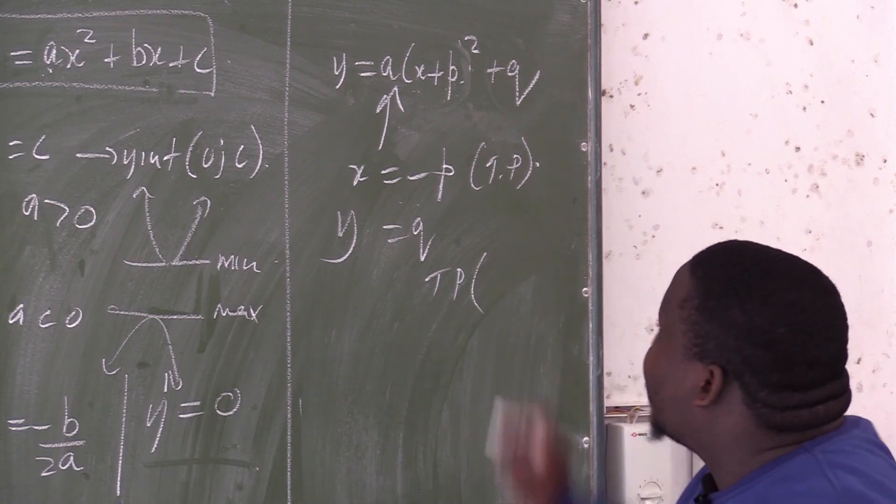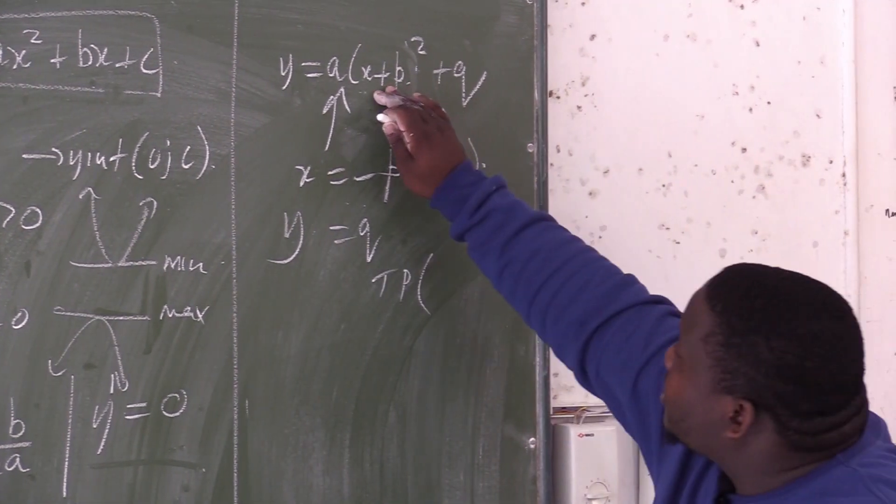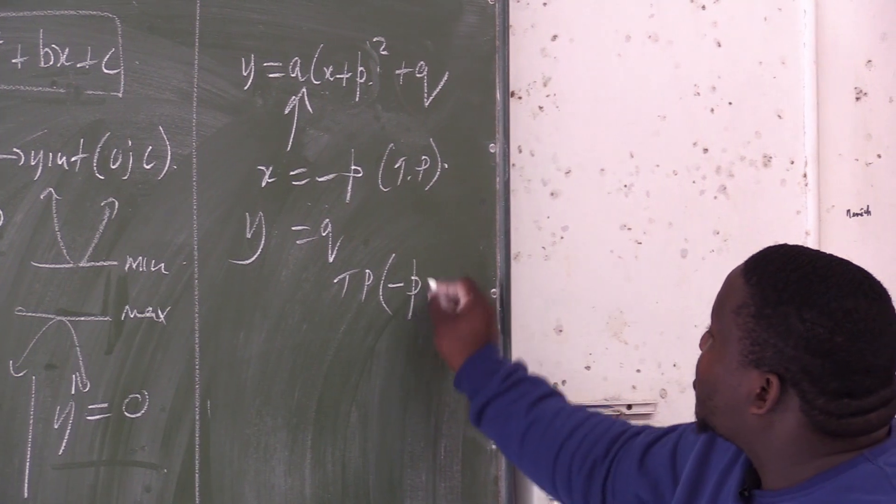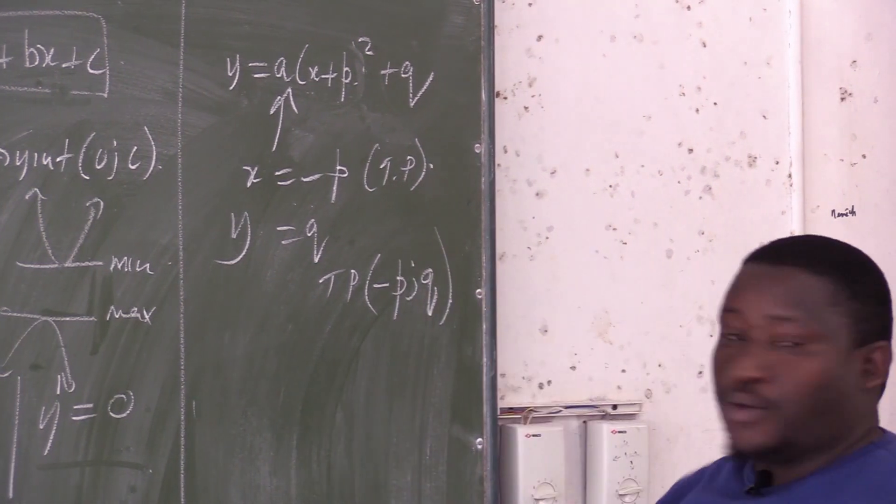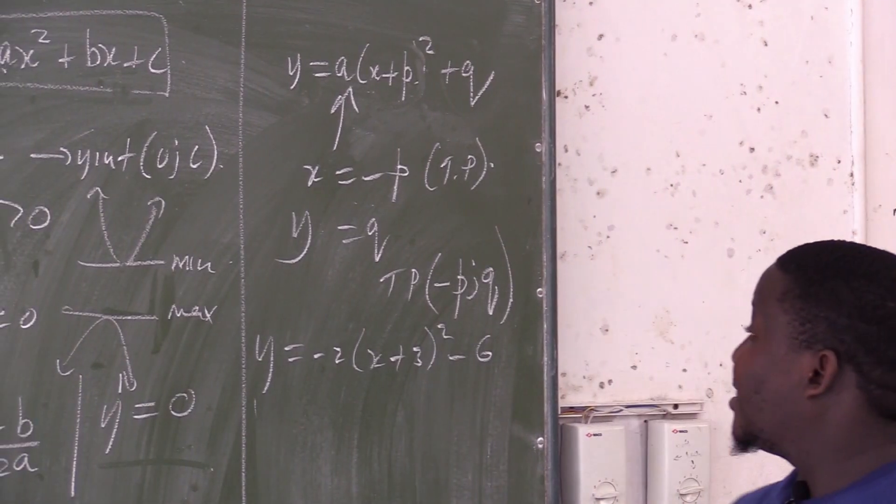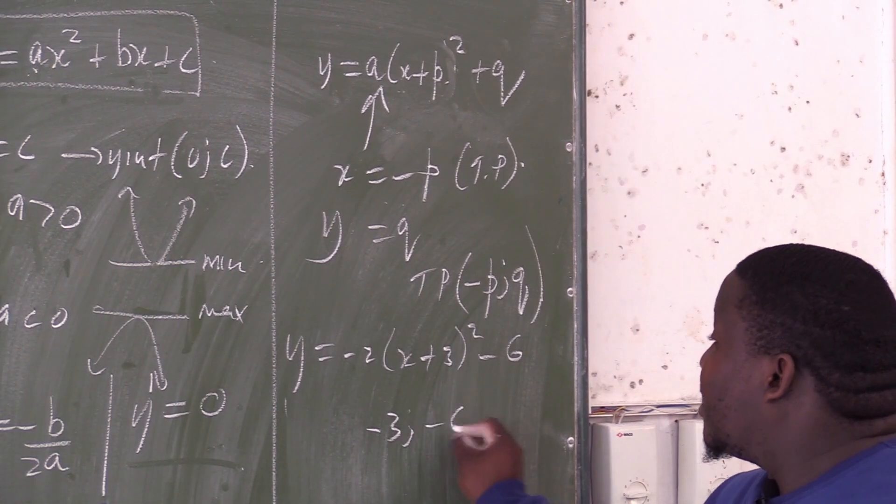What are the coordinates of the turning point then? According to this standard form, there will be negative p and q. This graph will have the turning point where it's negative 3 and the negative 6.